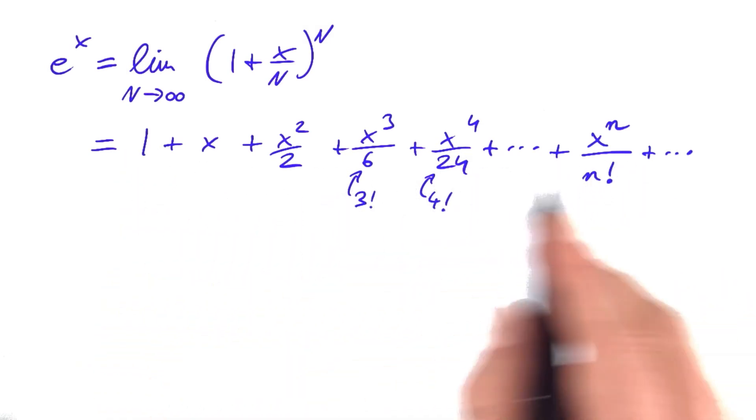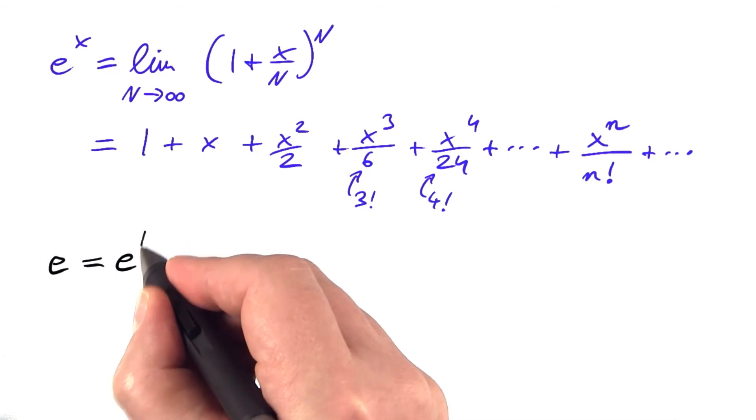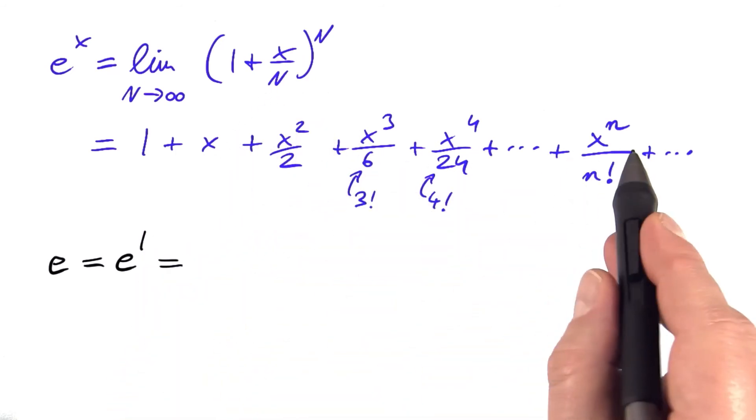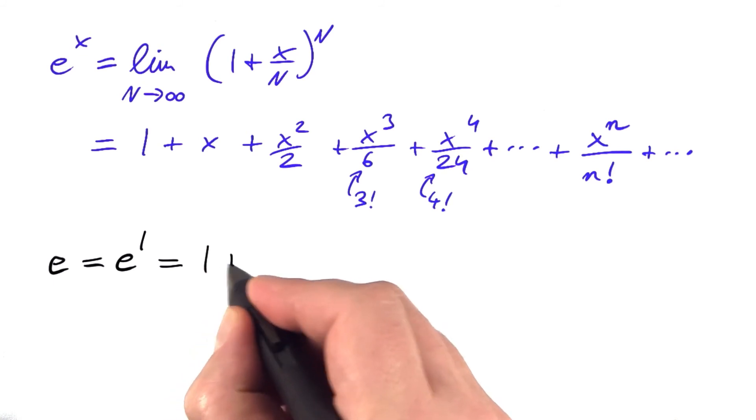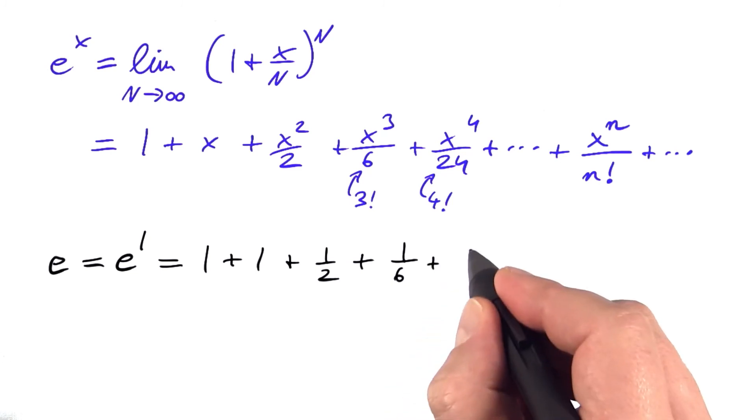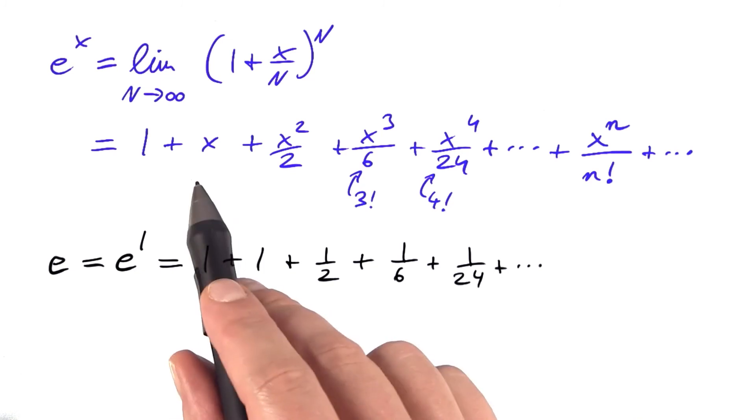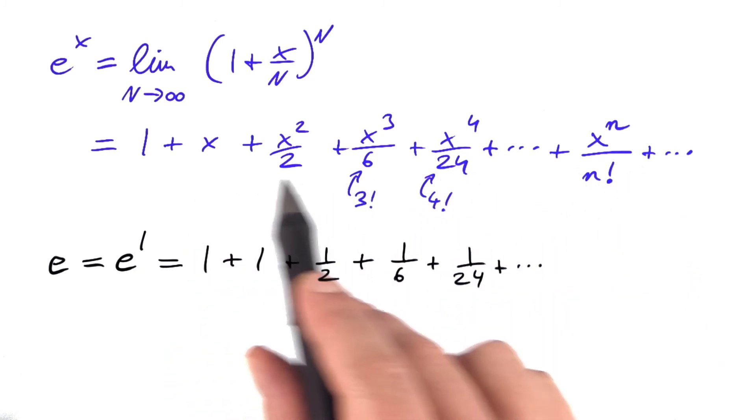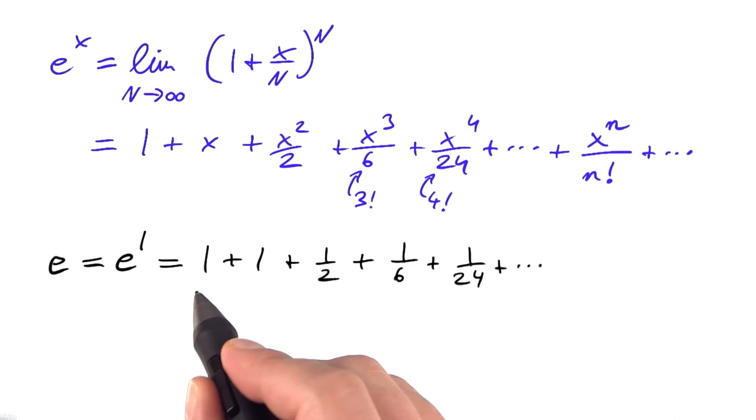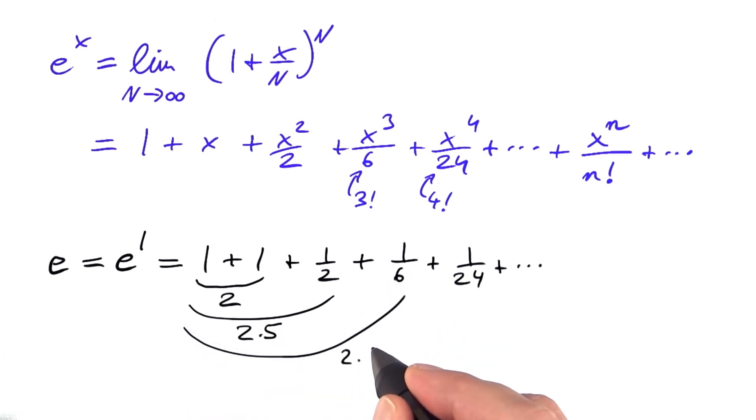This also gives us a way of computing e itself. e equals e^1. So we simply set x to 1, which means e = 1 + 1 + 1/2 + 1/6 + 1/24 + and so on up to infinity. And now you can see how efficient this power series is. 1 + 1, so we have 2 already, plus 1/2 is 2.5, plus 1/6 equals 2 point 6.